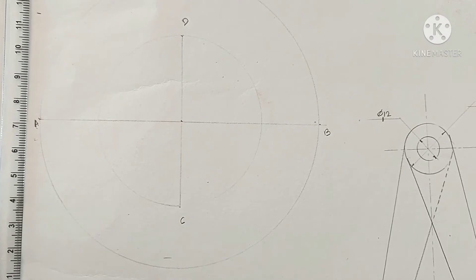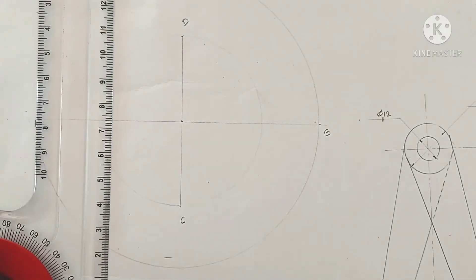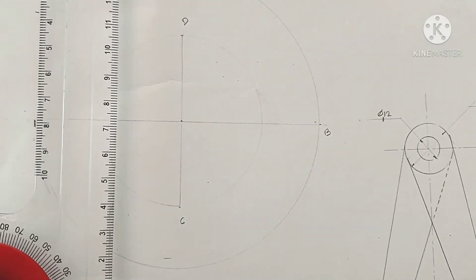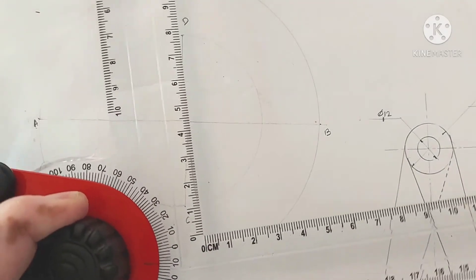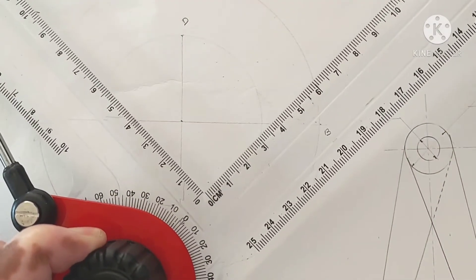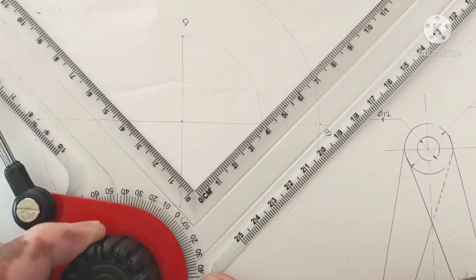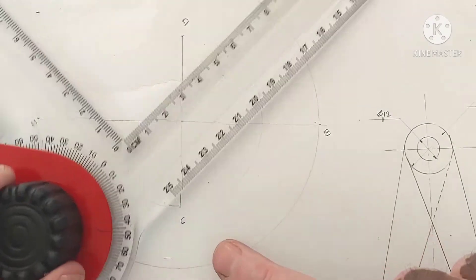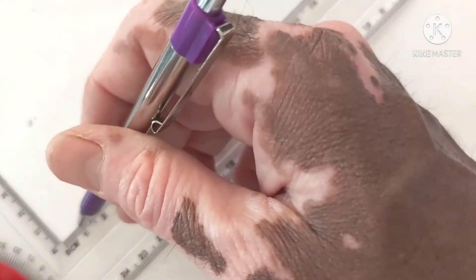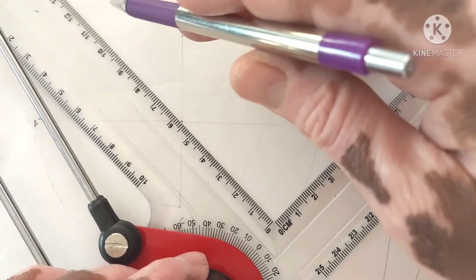Then next step, divide this circle into number of equal parts say 8. One angle will be of 45 degree. This 0 and this 45 degree, 45 degree, 45 degree, then 45 degree, this 45 degree.